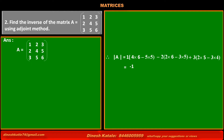Solving the first bracket: 4×6 = 24 minus 25 = -1. Second bracket: 2×6 = 12 minus 3×5 = 15, so 12 - 15 = -3; with the outside minus sign gives +3. Third bracket: 2×5 = 10 minus 3×4 = 12, so 10 - 12 = -2. Combining: -1 minus 6 plus 6 = -1. Therefore determinant of A = -1, which is not equal to 0.